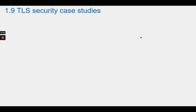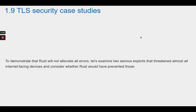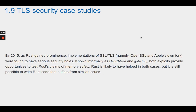Section 1.9 TLS Security Case Studies. To demonstrate that Rust will not alleviate all errors, let's examine two serious exploits that threaten almost all internet-facing devices and consider whether Rust would have prevented those. By 2015, as Rust gained prominence, the implementations of SSL TLS, namely OpenSSL and Apple's own fork, were found to have serious security holes. Known informally as Heartbleed and GoToFail, both exploits provided opportunities to test Rust's claims of memory safety. Rust is likely to have helped in both cases, but it is still possible to write Rust code that suffers from similar issues.